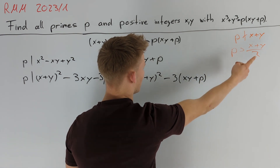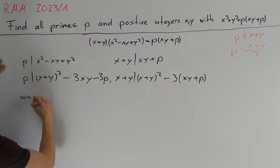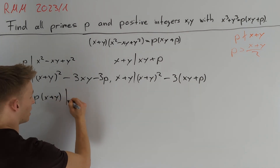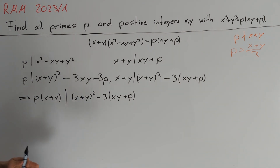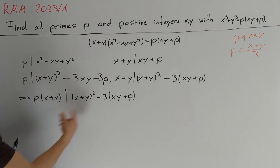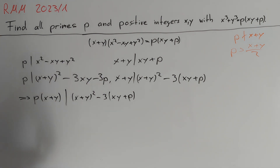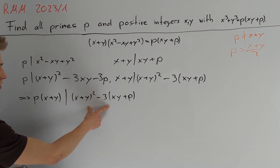Since p does not divide (x + y) and p is prime, we conclude that p·(x + y) divides the term B = (x + y)² - 3xy + p. We consider three cases: B > 0, B < 0, or B = 0.